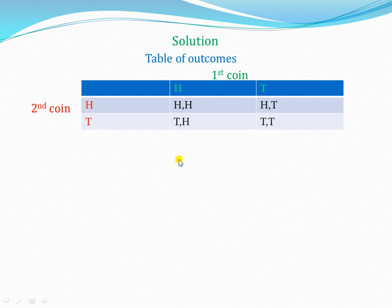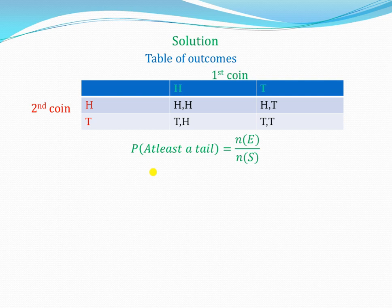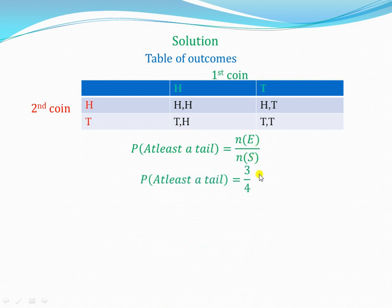Now let's answer the question. The question asks for the probability of at least a tail. When they say at least, it means the minimum — so one tail or even more. Head-head does not contain a tail, so we ignore it. Head-tail has one tail, tail-head has one tail, and tail-tail has two tails — all qualify. So the number of events is 3, and the sample space is 4. Our probability is therefore 3 out of 4.